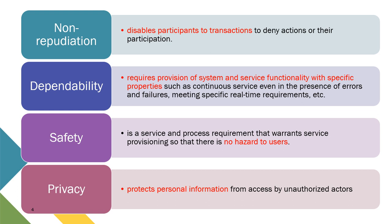The next component is dependability, which requires provision of system and service functionality with specific properties such as continuous service even in the presence of error and failure, and meeting specific real-time requirements. When operating a system, we want it to be dependable — meaning that even if there is an error or failure, the operation is not supposed to stop, and we should still be able to operate the system.